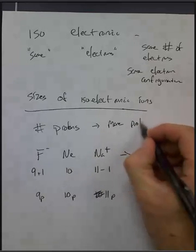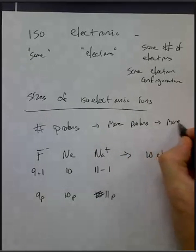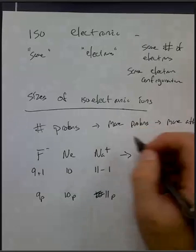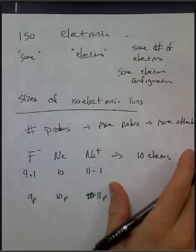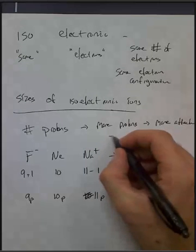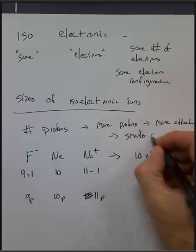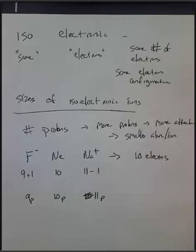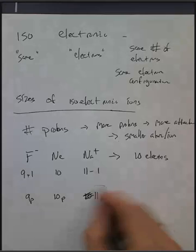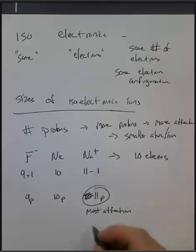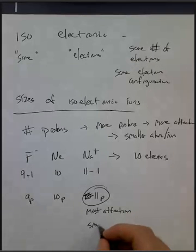It's all about number of protons. More protons means more attraction, which, as we've been talking about all unit, means a smaller atom or ion. So between these guys, 9 protons, 10 protons, and 11 protons, we've got the most attraction here, which means Na plus will be the smallest.